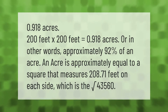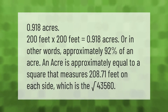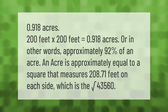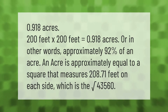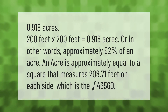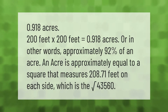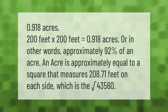200 feet by 200 feet equals 0.918 acres, or in other words, approximately 92 percent of an acre. An acre is approximately equal to a square that measures 208.71 feet on each side, which is the square root of 43,560 square feet.